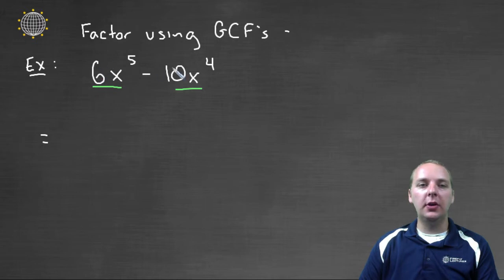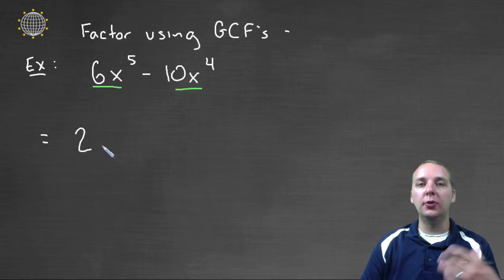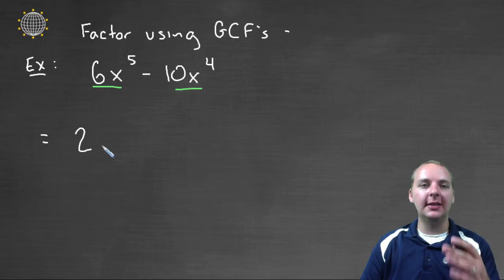So to start with we'll look at the coefficients. So what's the GCF of just the 6 and the 10? Well that would be a 2. 2 is the greatest number, the largest number that divides evenly into 6 and 10.